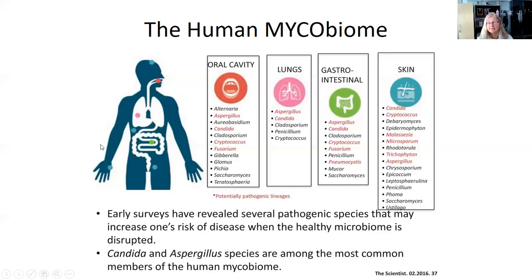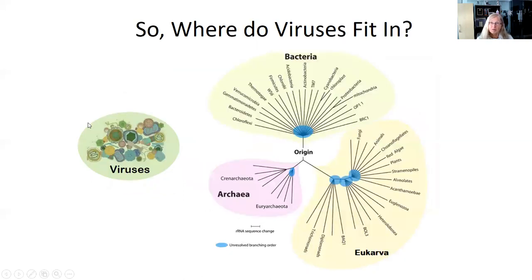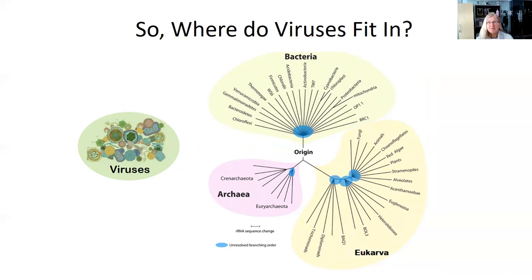Where do viruses fit in? That's a really good question—nobody knows exactly. Viruses are not considered to be on any of the three branches of life because their genomes are not the same as cellular organisms' genomes, and critically, they are not cellular. Since life is based on cells, viruses present a fundamental problem. You can study something without having to include it in existing classification systems, and there is much we both know and don't know about viruses—including where they came from and whether cells or viruses came first.